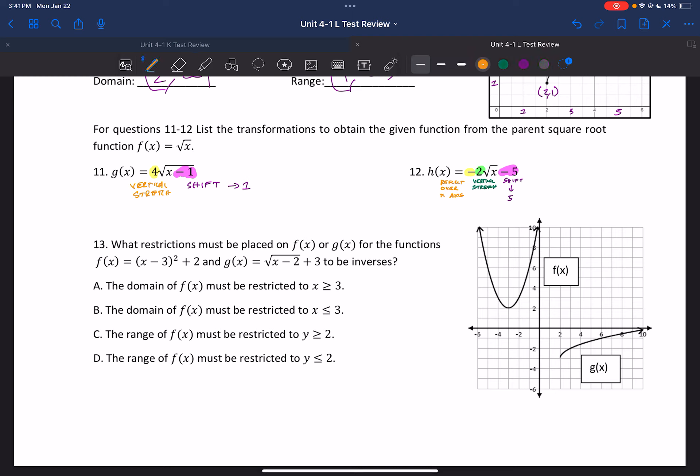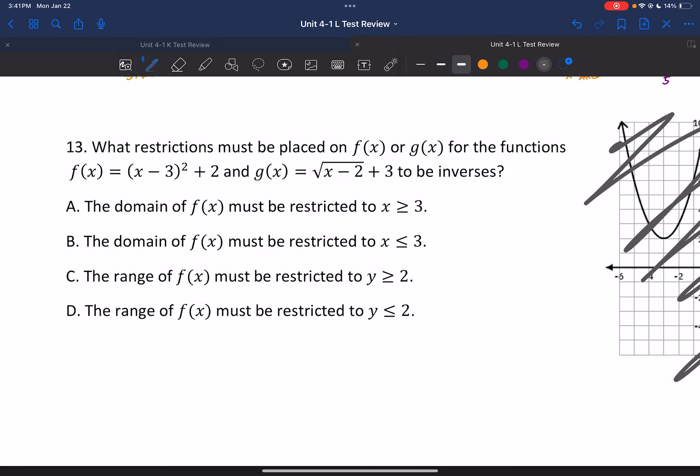Finally, for the last question, this graph is completely wrong, so ignore that. If we actually graph this thing, when we're talking about restrictions, we always put the restrictions on the quadratic. So the function that has the squared on that. So because we have a squared, we're restricting f, not g. We also always restrict the domains. So c and d are just out. If we graph this, it would have a vertex at 3 comma 2. Now we want the positive side of this. So we want to go from 3 to positive infinity, or greater than or equal to 3. So a.